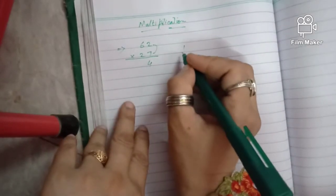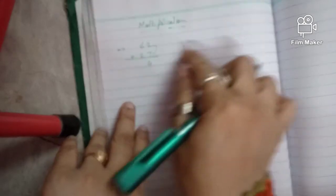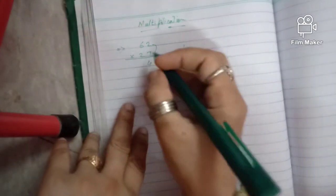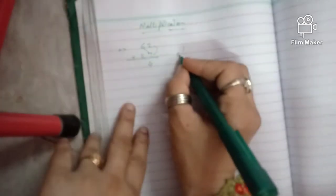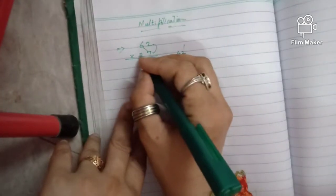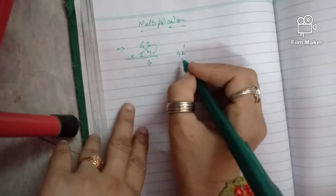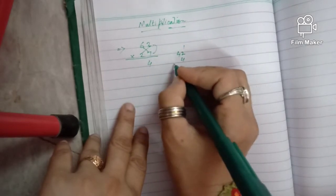1 is carry. Now we will cross multiply. 7 times 6 is 42, and 2 times 2 is 4. Now we will sum this.